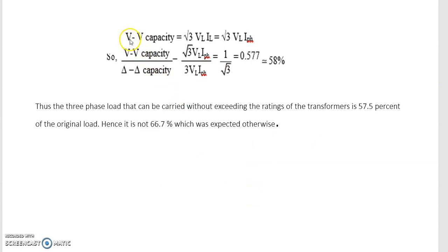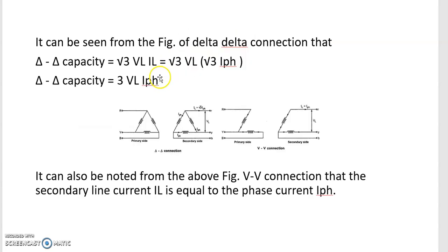Thus we can say that the V-V capacity reduces to root three VL IL, that is root three VL IPh in case of V-V capacity. Let's compare the two capacities, V-V capacity and delta-delta capacity. As obtained in the previous two equations, V-V capacity is root three VL IPh and delta-delta capacity is three VL IPh.